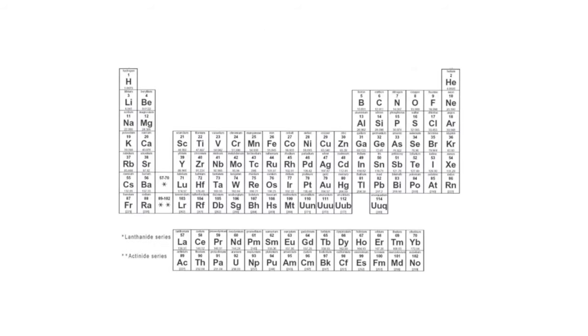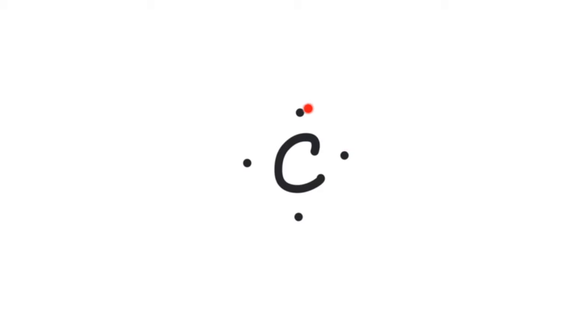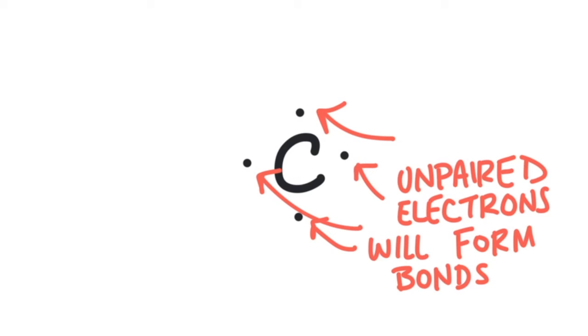Carbon is represented on the periodic table by the letter C. It's in the fourth group on the periodic table, and it has four valence electrons. The electron dot structure of carbon would look like four electrons spaced evenly around the symbol C. Electrons want to be paired with another electron, and since each of carbon's electrons are unpaired, carbon is going to have to chemically bond with other atoms so that its electrons are paired up. Carbon has four unpaired electrons, so it will bond four times. These bonds are covalent bonds, which means carbon shares its electrons with other atoms.